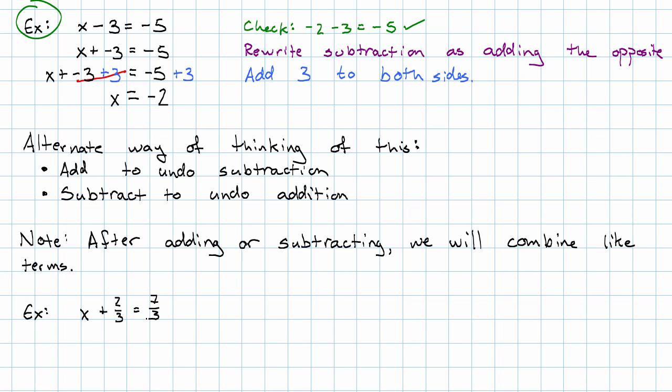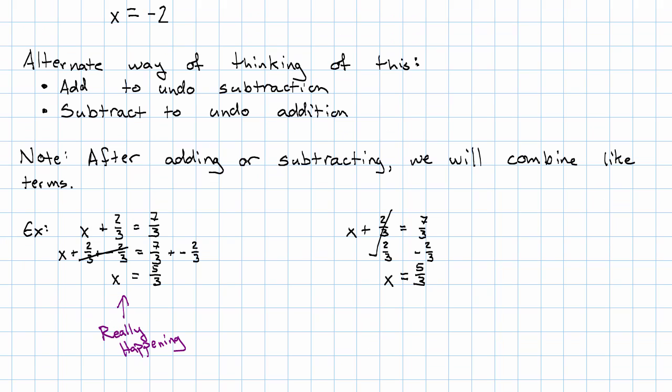So for example, if I'm solving x plus 2 thirds equals 7 thirds, what I'm actually going to do is add negative 2 thirds to both sides. The 2 thirds and negative 2 thirds cancel and I'm left with x equals 5 thirds. Instead of writing this this way, I could write my x plus 2 thirds equals 7 thirds and just write subtract 2 thirds underneath the constant term. The 2 thirds and negative 2 thirds cancel and I'm just left with x equals 5 thirds. Notice, what I've written on the left is what's really happening. What I've written on the right is a shortcut way of writing out what I've written on the left.